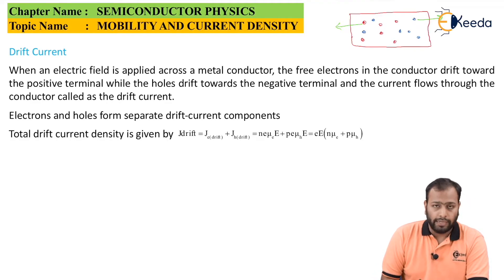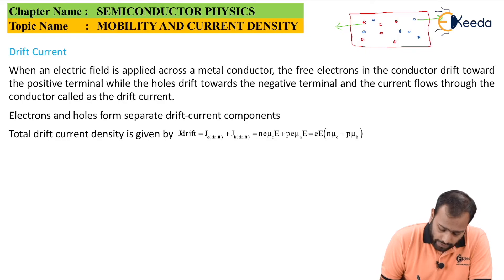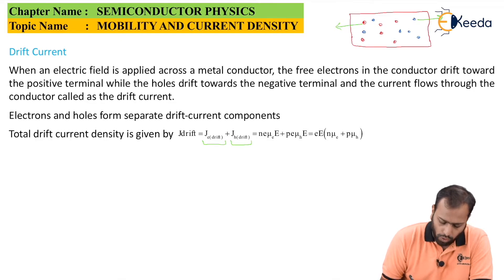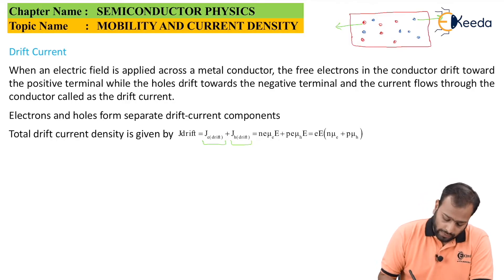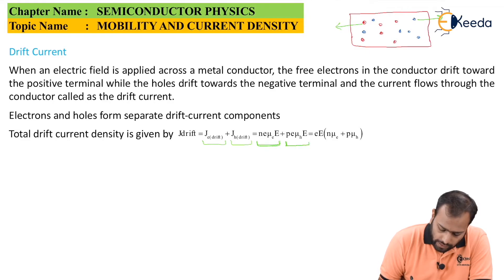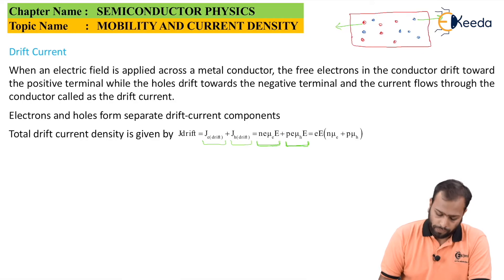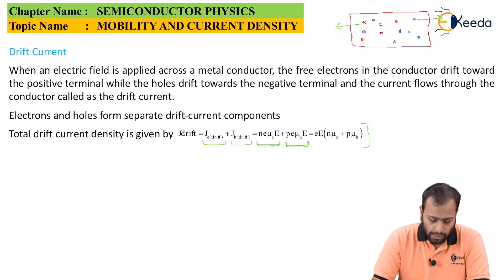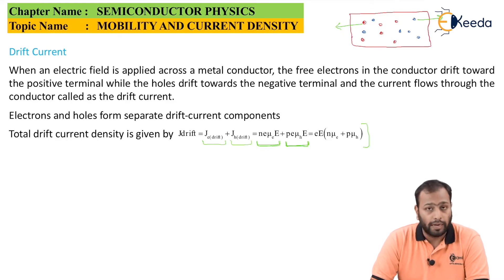The total drift current density J_drift is the sum of drift due to electrons and drift due to holes. The formula is: J_drift = (n·e·μe + p·e·μh)·E, where n·e·μe·E is the drift current density for electrons and p·e·μh·E is the drift current density for holes. Taking E common gives us the total drift current density formula.